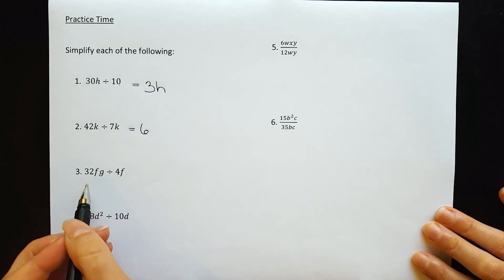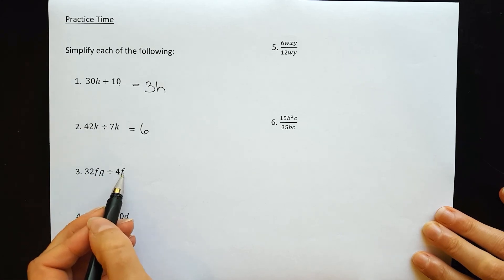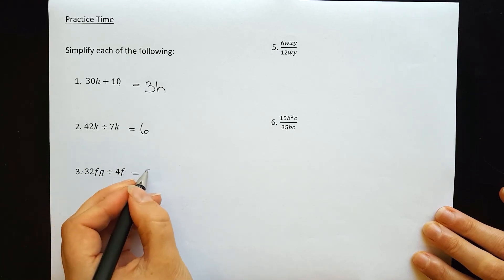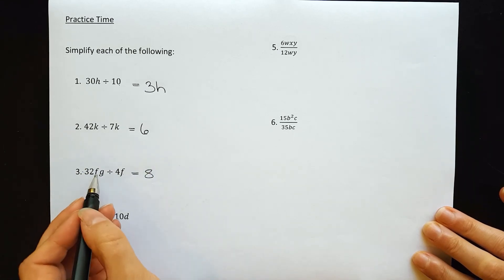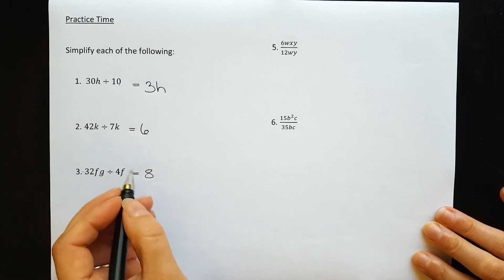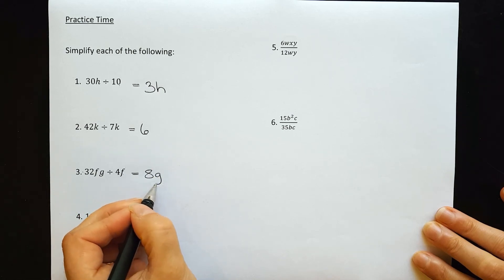Question 3: 32fg divided by 4f. Let's start with the numbers: 32 divided by 4 goes 8 times. The f in the first term cancels with the f in the second, so the f's disappear but the g remains. The answer is 8g.